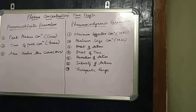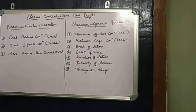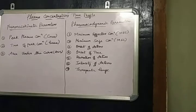The pharmacodynamic parameters — there are seven of them: minimum effective concentration (MEC), maximum safe concentration (MSC), onset of action, onset of time, duration of action, intensity of action, and finally therapeutic range.